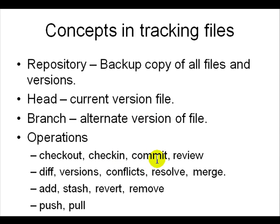Before you commit you may also want to review the changes — you send a diff of what you changed compared to the repository to someone else and they will point out comments. After you make the corrections you can commit. There is also a concept of diff — you can have many versions of the file, 1, 2, 3, 4 over time, and you can diff different versions and see what change was made when and why.